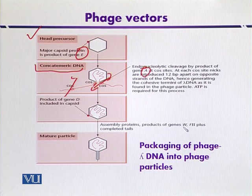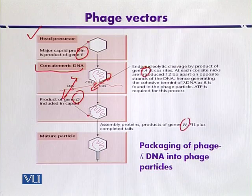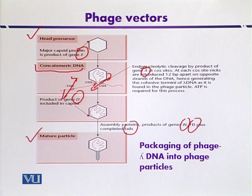Gene A converts the concatemeric DNA into monomeric form, and this monomeric form is then packaged into the phage head. The products of gene D are also included during the encapsulation process. Finally, some assembly proteins — including the products of gene W or F2, plus the tail components — ultimately result in the production of mature phage particles.